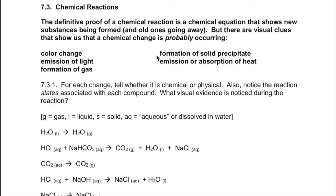A lot of textbooks say you can tell the difference between a chemical and a physical change because chemical changes look more intense or happen faster. That's not true — I have some videos where you can have a chemical change and a physical change looking extremely similar. These are some indications that a chemical change could be happening, especially a color change. Formation of gas or a solid can be chemical or physical changes. None of these are completely definitive. The definitive way to tell a chemical change is to see that new substances are being formed.